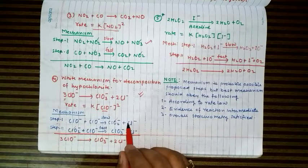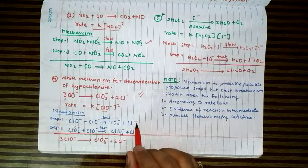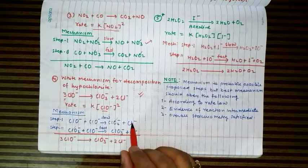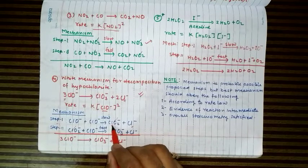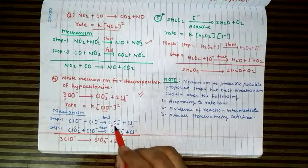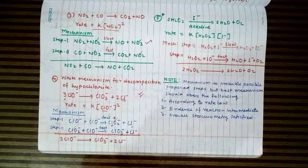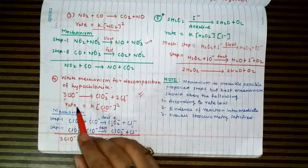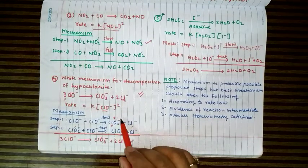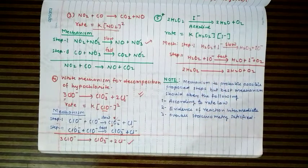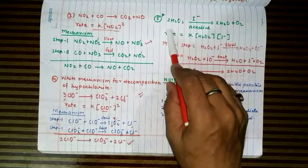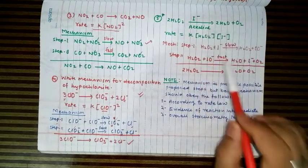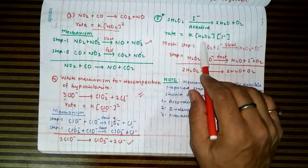The unstable ClO2⁻ intermediate proceeds to the next reaction step. Writing 2Cl⁻ + O to balance, we note Cl⁻ is a product. The overall stoichiometry of the balanced chemical equation must be satisfied at the end, and intermediate species must cancel. Note that sometimes a catalyst is also involved in the rate-determining step — as in the important reaction where iodide acts as a catalyst in an alkaline medium.